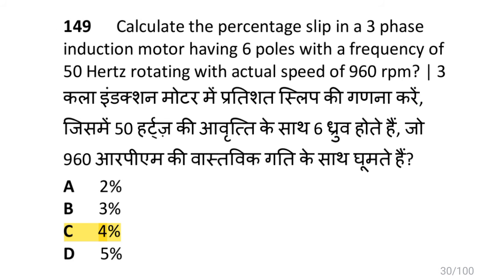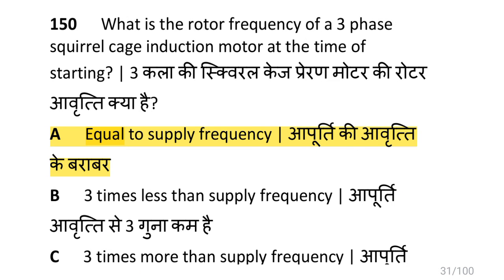Calculate the percentage slip in a three phase induction motor having six poles at 50 Hz rotating at an actual speed of 960 RPM. Using the formula: (Ns minus Nr) divided by Ns, multiplied by 100, with synchronous speed 1000 and rotor speed 960, the percentage slip is 4%.